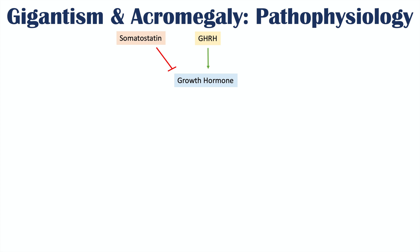Glucose can also regulate growth hormone — it can suppress growth hormone release, which is important for how these conditions are diagnosed. It's also important to note that growth hormone is released in a pulsatile manner, with higher levels occurring during sleep. Growth hormone acts on bones, and if it acts on bones whose growth plates have not yet closed, this leads to bone growth and gigantism.